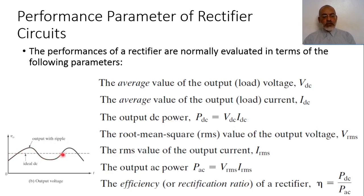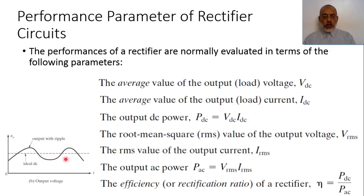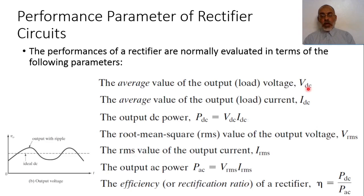The output voltage is not a constant value; it is varying. If we take the average value along a certain time, it would be the equivalent ideal DC value. So the average value of the output load voltage would be the DC voltage VDC. In a similar way, the average value of the output current is the equivalent DC current. According to VDC and IDC, we can obtain the output DC power, which is VDC multiplied by IDC.